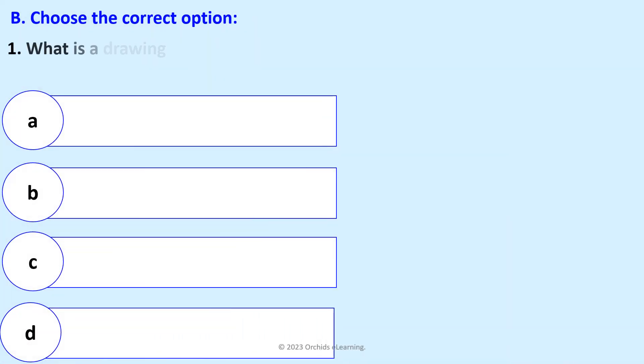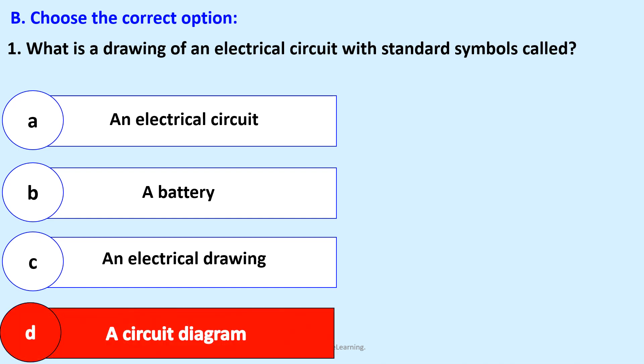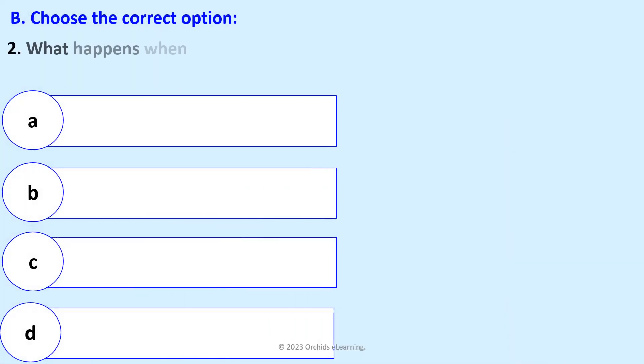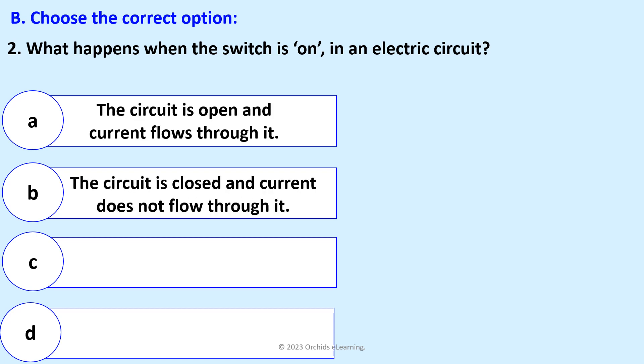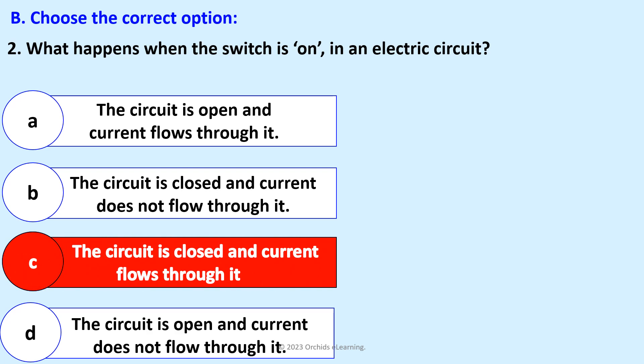Choose the correct option. What is a drawing of an electrical circuit with standard symbols called? A circuit diagram. What happens when the switch is on in an electric circuit?